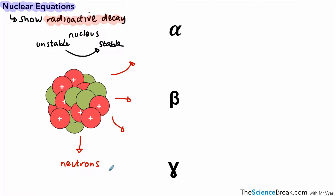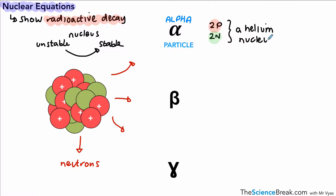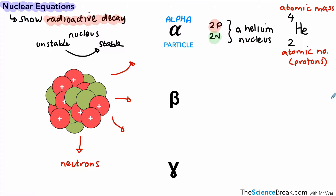In terms of the first one, we've got our alpha particle. An alpha particle is made of two protons and two neutrons. Overall, that gives it a positive charge, and two protons and two neutrons is the same as a helium nucleus — so we have a plus two charge. We write an alpha particle with the atomic mass at the top and the atomic number at the bottom, which tells us the number of protons in the nucleus.